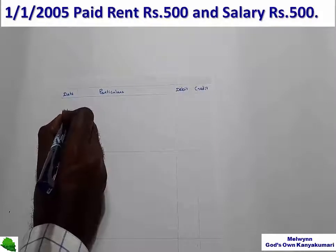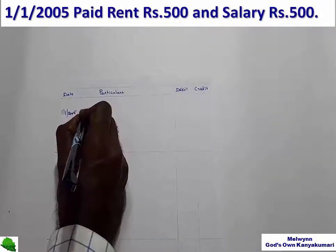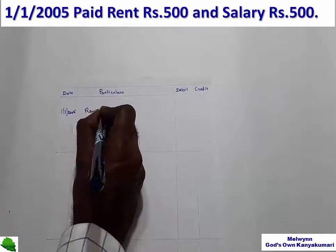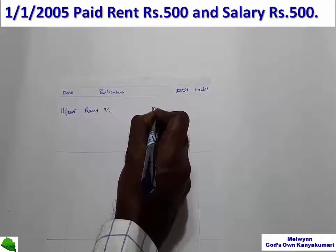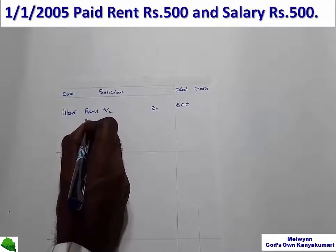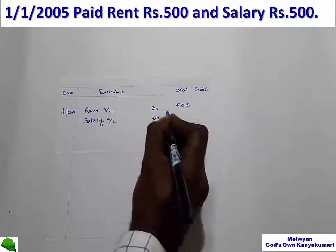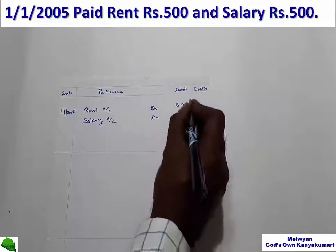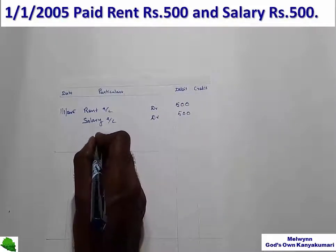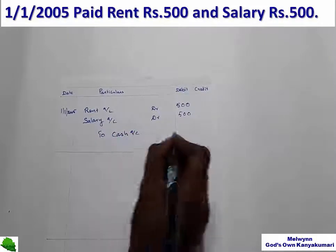1-1-2005: paid rent rupees 500 and salary rupees 500. These two accounts are nominal accounts — expenses on the same date. Rent account debit 500, salary account debit 500, to cash account.